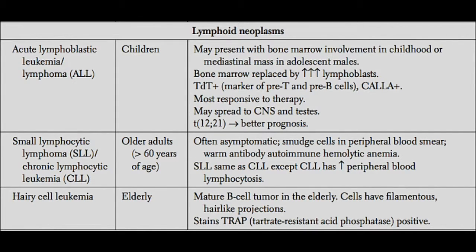The next type of leukemia is hairy cell leukemia, which is a disease primarily of the elderly. It's a mature B cell tumor that has little tiny filament-like projections all around the cell cytoplasm that resemble hairs — hence hairy cell leukemia. The important thing to remember is that these cells are TRAP positive — tartrate-resistant acid phosphatase. A helpful mnemonic: you want to TRAP the hairy spider. Hairy cell leukemia is TRAP positive.